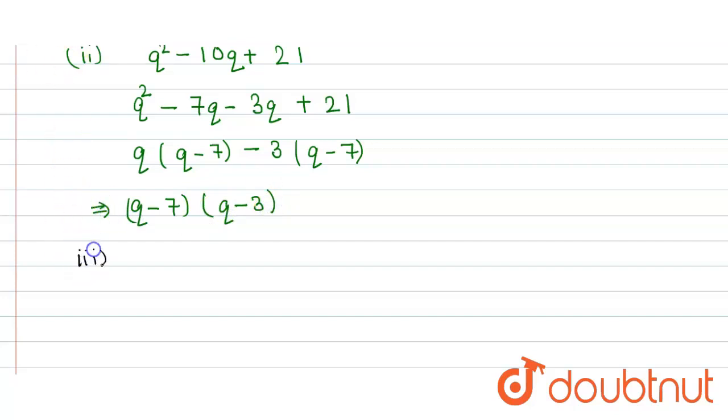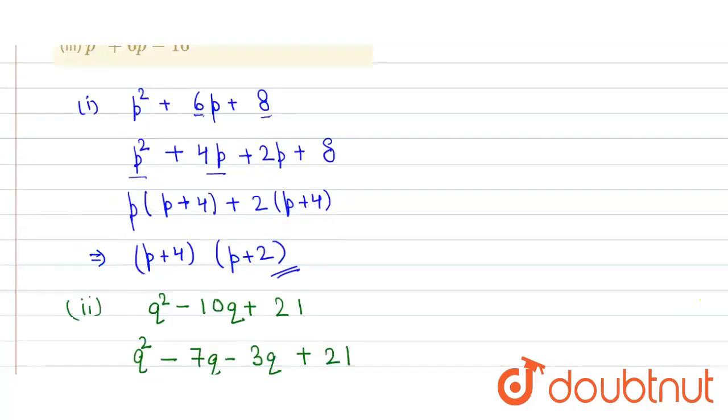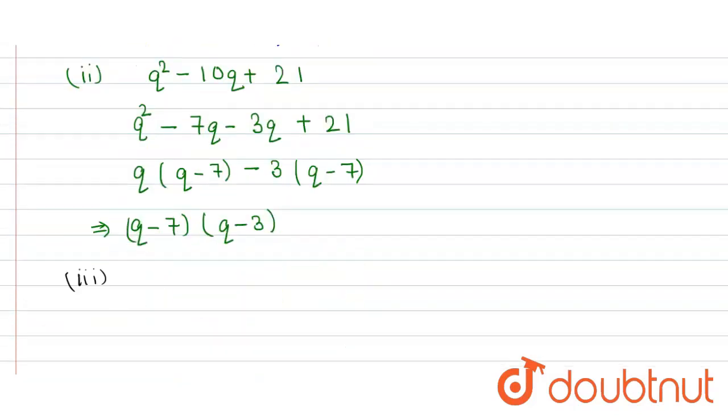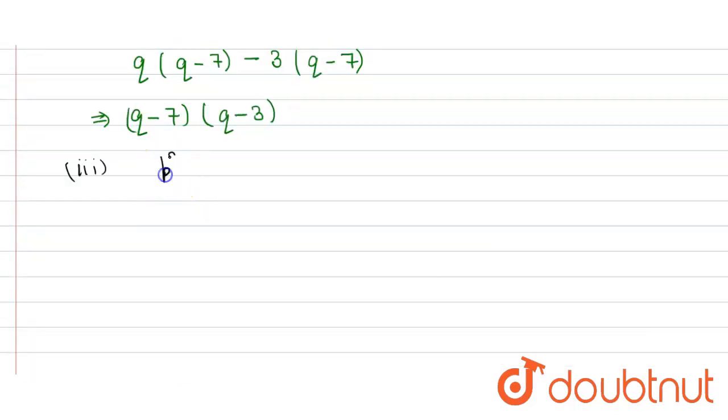Similarly in the third part, p² + 6p - 16. Again we split this middle term, so it is p² + 8p - 2p - 16.